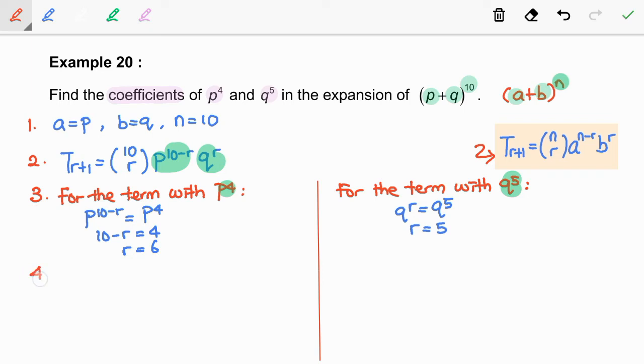Step 4: Substitute both values of r into the r+1 terms formula in step 2. So for the term with p^4, we have T_7 = (10 choose 6) p^4 q^6.